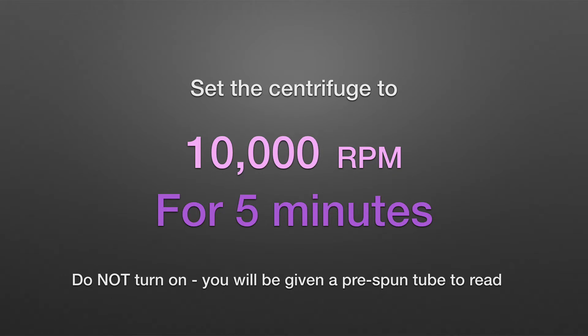Set the centrifuge to 10,000 rpm for five minutes, but do not turn it on. You're going to be given a pre-spun tube to read. 10,000 for five.